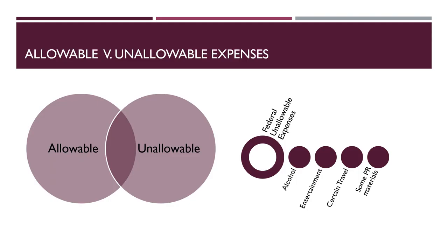Allowable and unallowable expenses: allowable expenses are expenses that the grantor will allow in the budget, and grantees can use grant funds to pay for these. Unallowable expenses are those the grantor will not approve as line items in the grant budget. Understanding these is important to ensure your organization does not incur an expense they will have to pay from another source, such as from the general operating budget or another program fund, and it helps maintain compliance with grant award guidelines. Different grantors may have different guidelines — for example, while a federal agency may allow indirect expenses, a family foundation may not, or a specific program may only fund project equipment and not staff salaries.